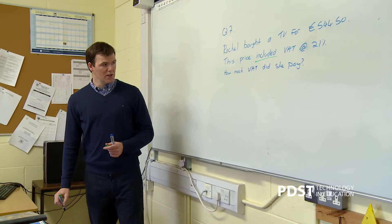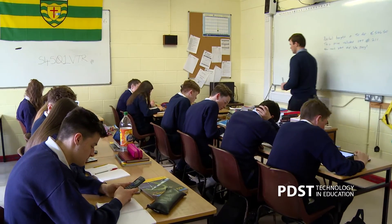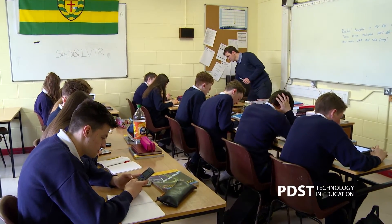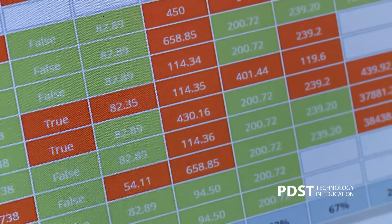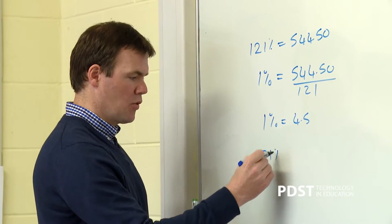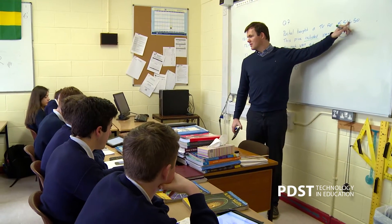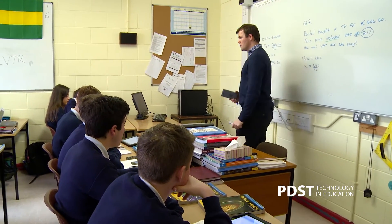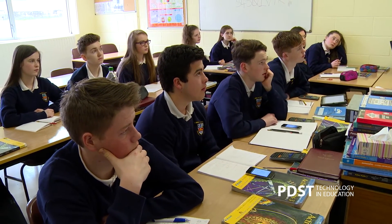It included VAT at 21% — how much VAT did she pay? At the end of the lesson today it was clear from the assessment that question 7 posed a lot of difficulties for students. So I did out question 7 on the board and talked them through it step by step. I addressed the common mistakes they were making — a lot of them were doing one particular thing they shouldn't have been doing — and I explained why that wasn't the correct way to approach the question.